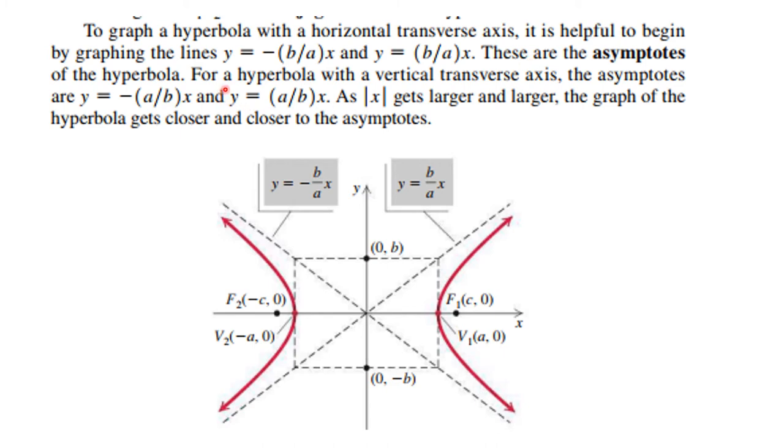And so as the absolute value of x gets larger and larger, the graph gets closer and closer to the asymptotes.